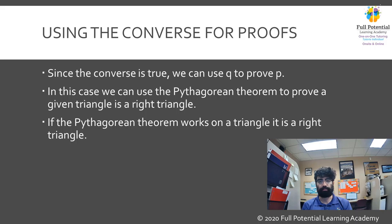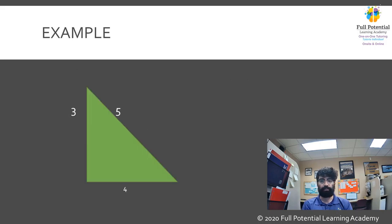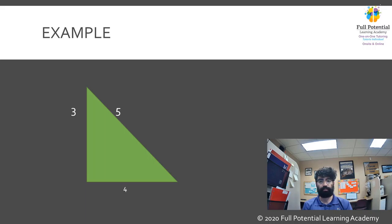Let's consider an example. Suppose that we must prove that a given triangle is a right triangle. No angle measures are given, but the sides are given as follows: 3, 4, and 5. Remember that the longest side is always the hypotenuse, c. Therefore, c equals 5. The legs are 3 and 4, which we can assign to a and b respectively.